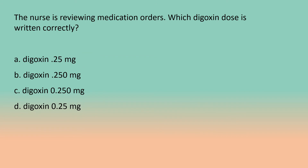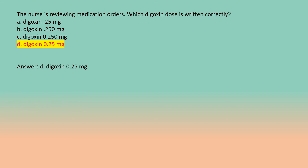The nurse is reviewing medication orders. Which digoxin dose is written correctly? A. Digoxin 0.25 mg. B. Digoxin 0.250 mg. C. Digoxin .250 mg. D. Digoxin .25 mg. Answer: A. Digoxin 0.25 mg. (A leading zero is required; trailing zeros should be avoided.)